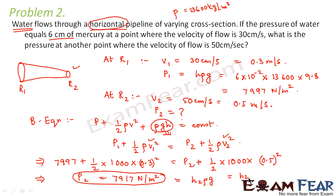So this will be equal to H2 into rho is 13600 into 9.8. So using this, we can say that H2 comes out to be 5.9 centimeter.